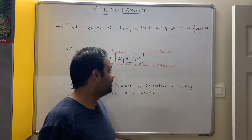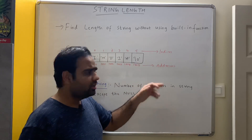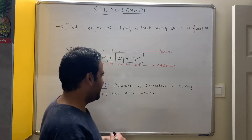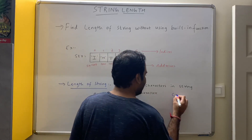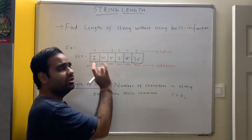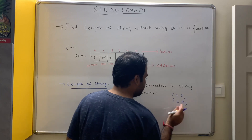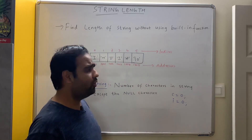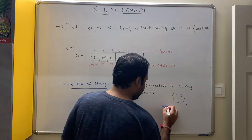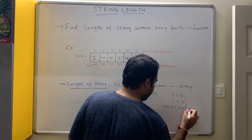How do we find the string length? We go on counting till we find the null character. Initially, the value of count is 0 because we start from 0, and the index will also start from 0. Hence, i is also equal to 0.